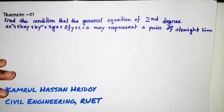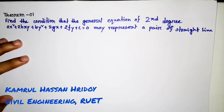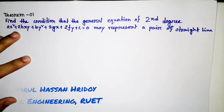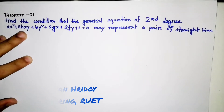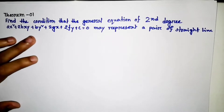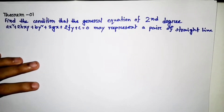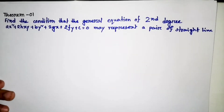Number 1: Find the condition that the general equation of second degree ax² + 2hxy + by² + 2gx + 2fy + c = 0 may represent a pair of straight lines.